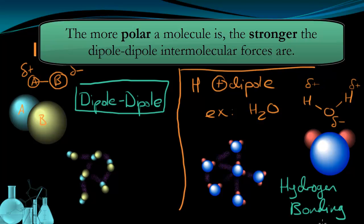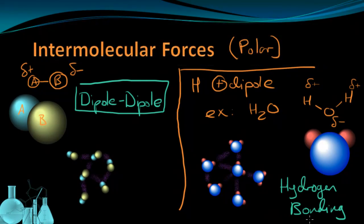So hydrogen bonding is our strongest form of intermolecular forces. Now it's important to note that even though we call it hydrogen bonding, this is not a true bond. It's just a way of talking about a very strong intermolecular force. So these are the two cases of intermolecular forces that can come up with polar molecules.